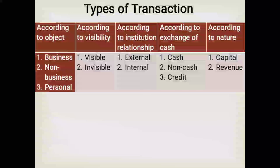External transactions include goods sold in cash and salary paid to a manager. Depreciation is an internal transaction. For exchange of cash — cash transactions include goods sold in cash, goods purchased in cash, salary paid in cash, and commission received in cash. Non-cash transactions include uncollectable debt, depreciation, discount allowed, and goods drawings.